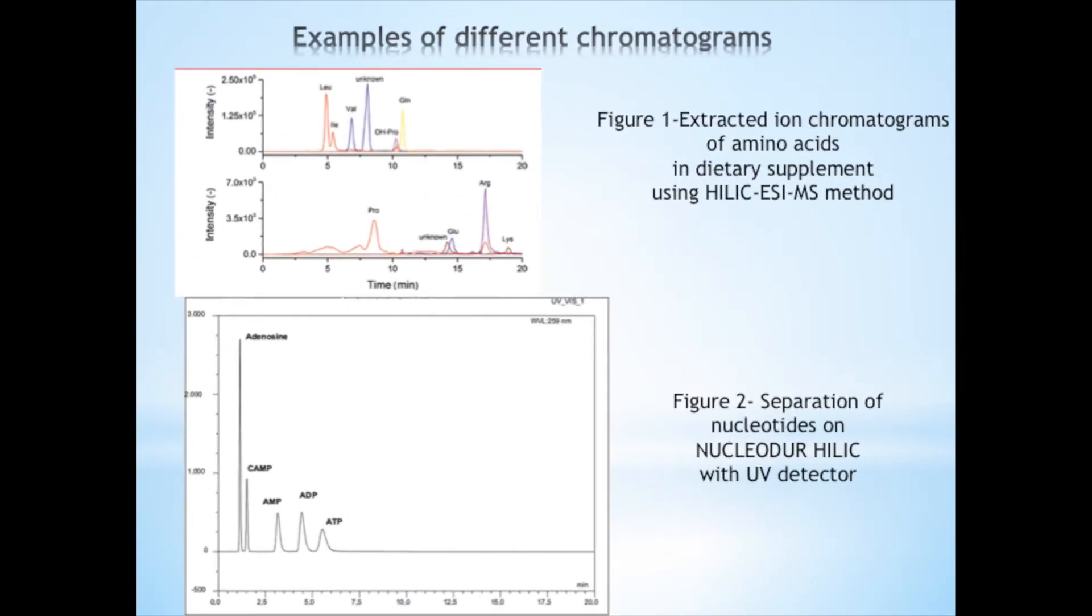These are some examples of chromatograms coupled with different detectors. Figure 1 shows extracted ion chromatograms of amino acids in dietary supplements using HILIC electrospray ionization mass spectrometry. You can see the separation with time of these amino acids and their respective intensities. Figure 2 shows the separation of nucleotides on a HILIC column with UV detector. At a certain wavelength, one can see the separation of compounds with time and their respective absorbances.